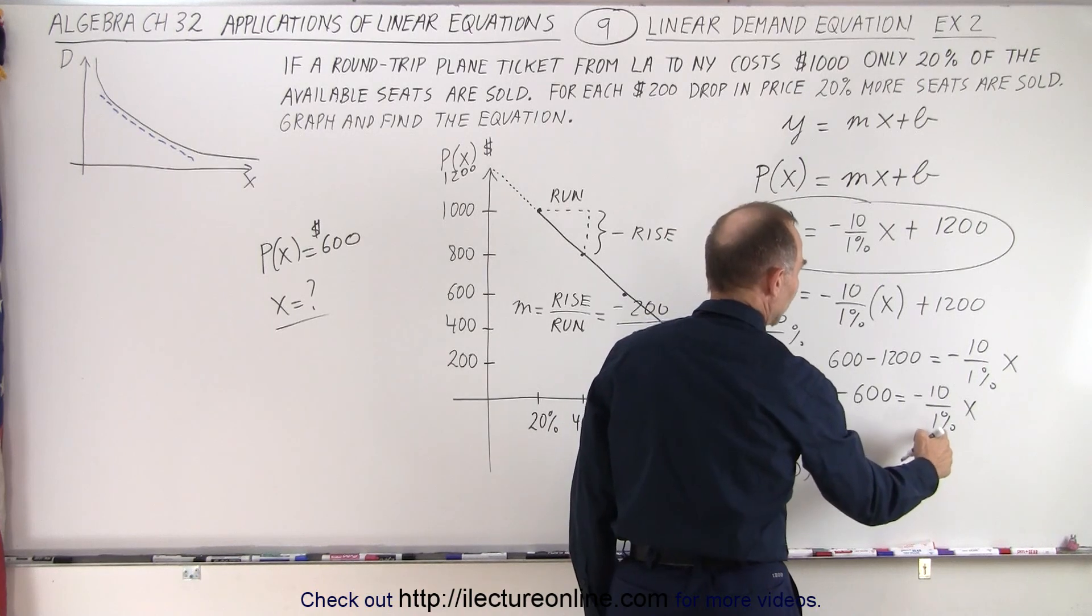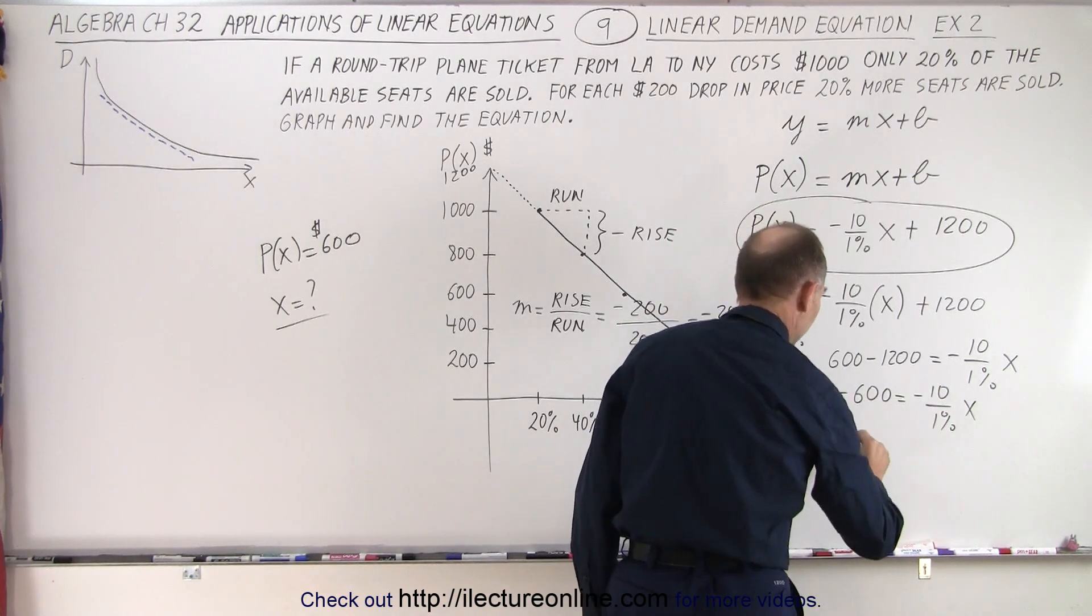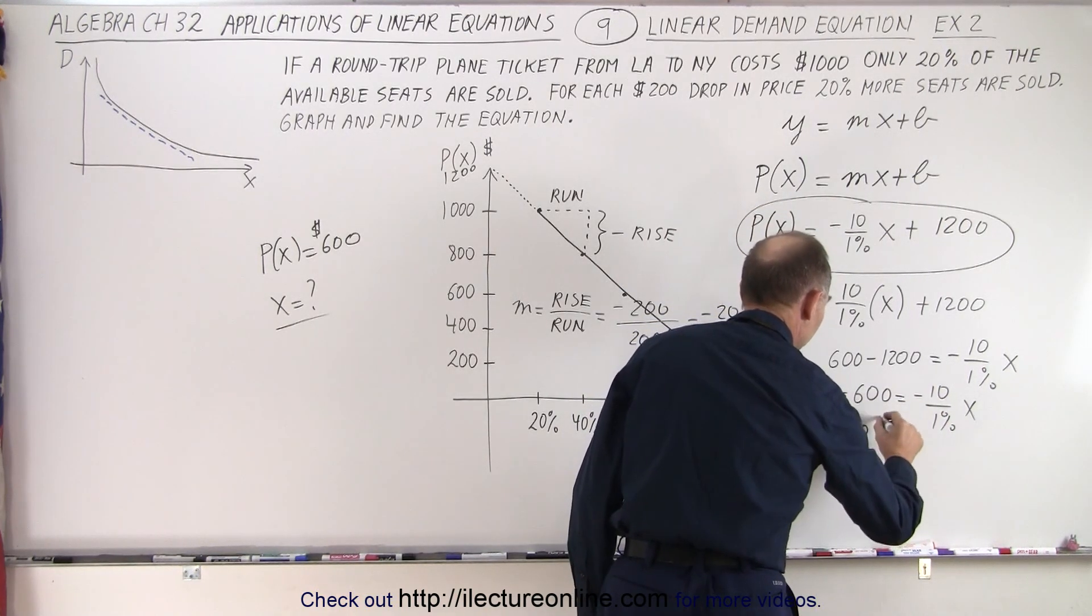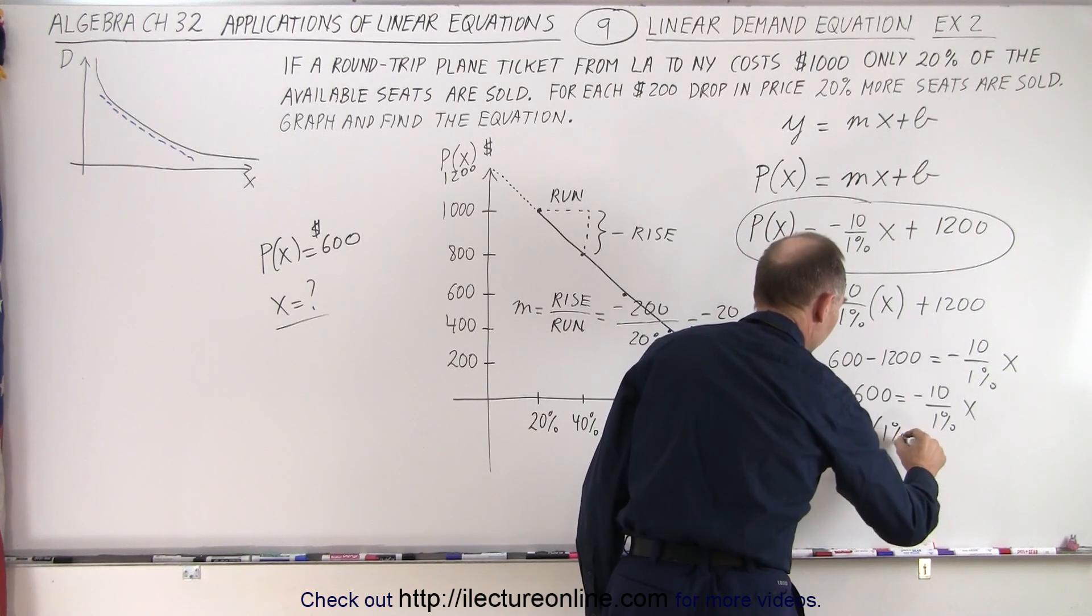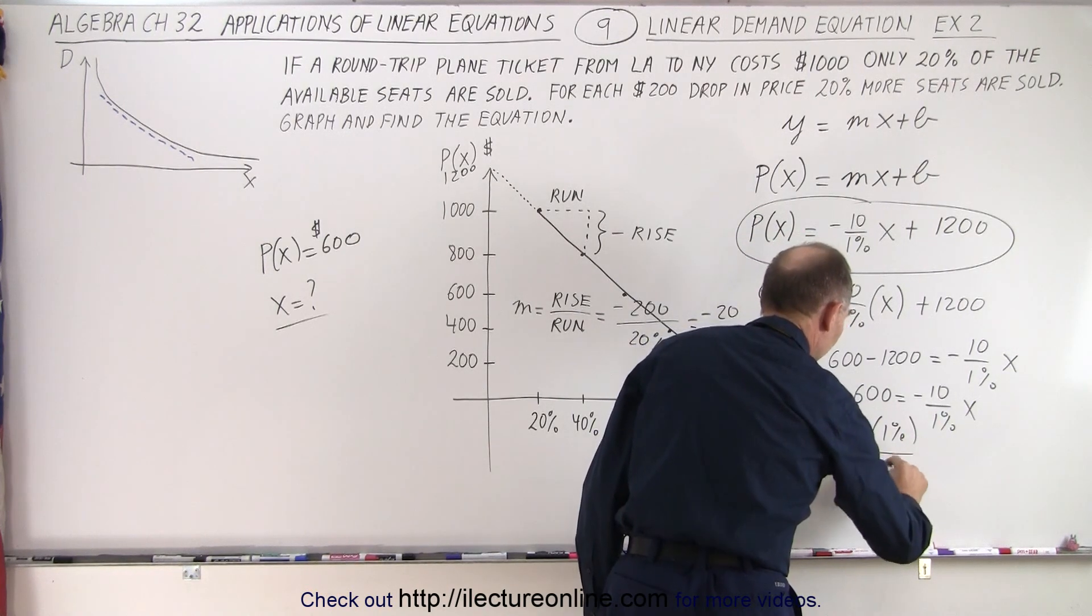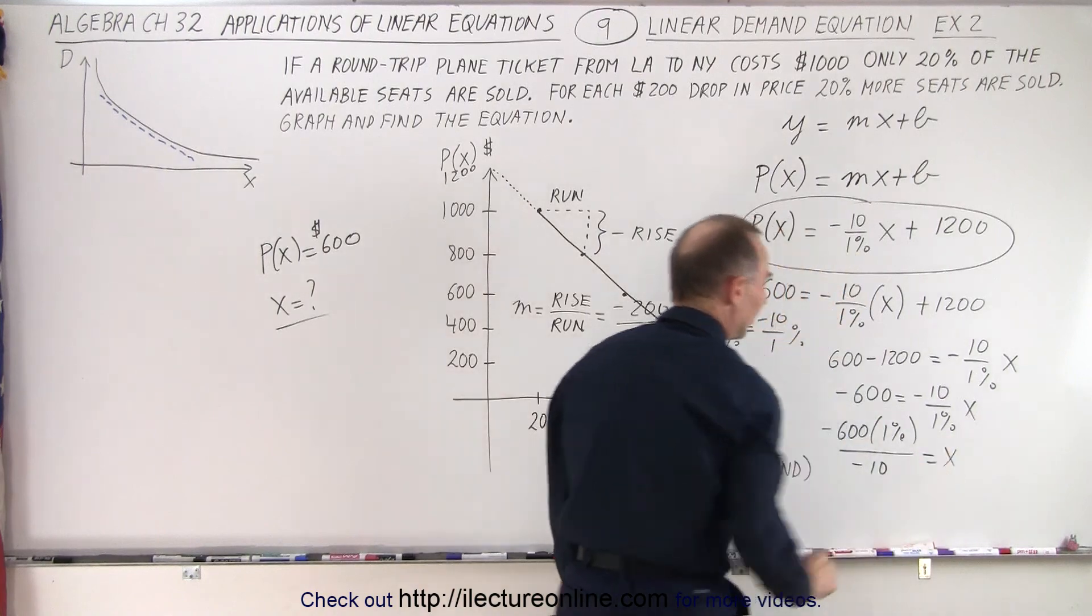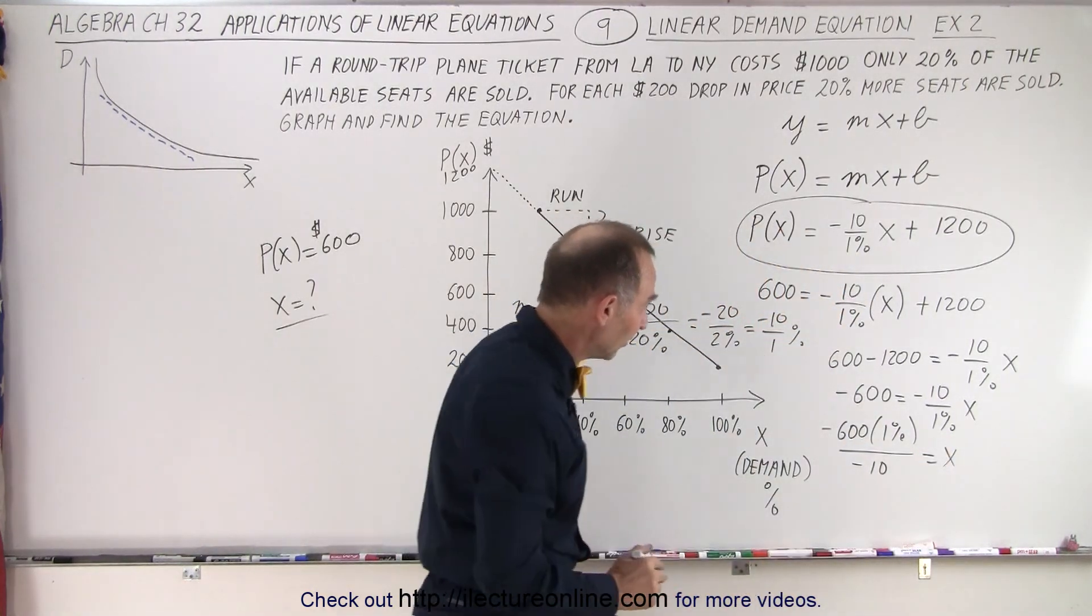And if we're going to solve for x, we need the 1% up here and the minus 10 down there. So minus 600 times 1% divided by minus 10 equals x. Now we need to simplify that and let's see what we get.